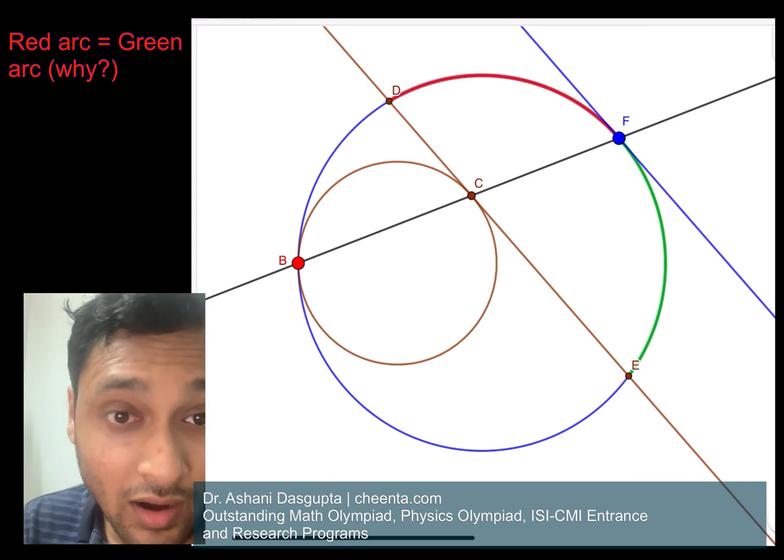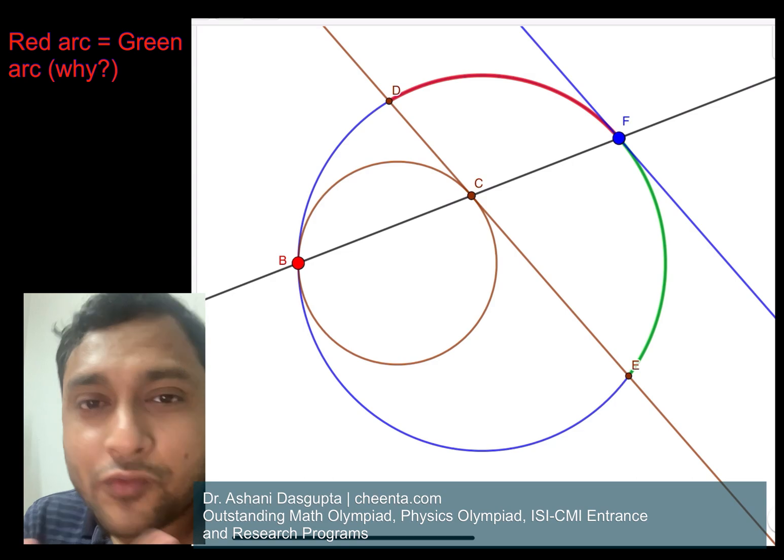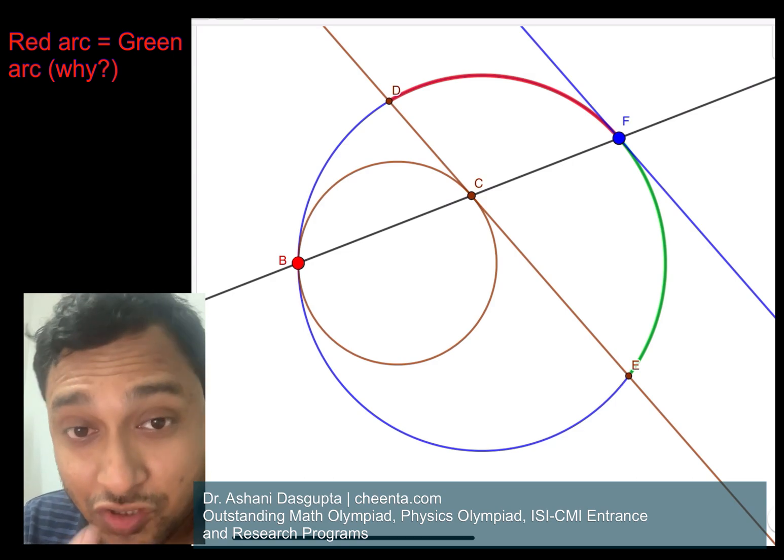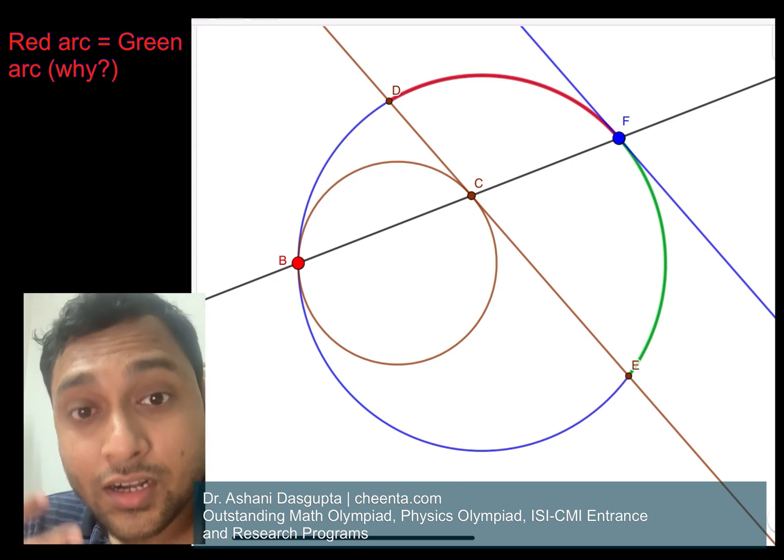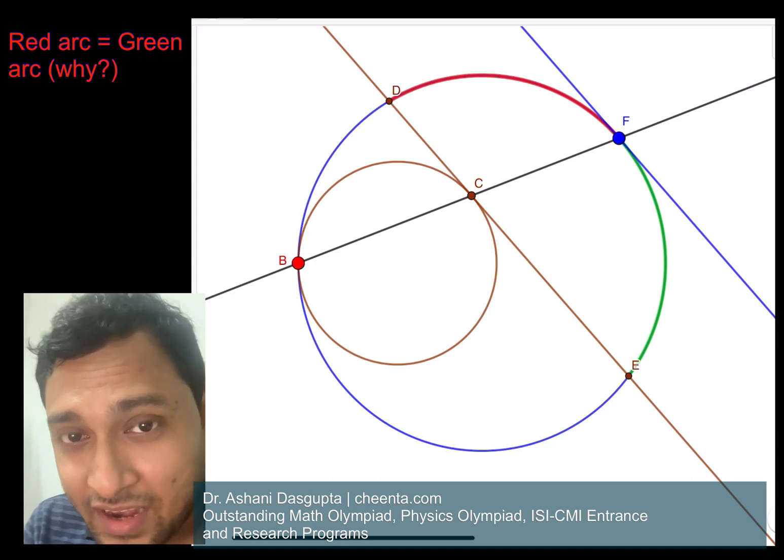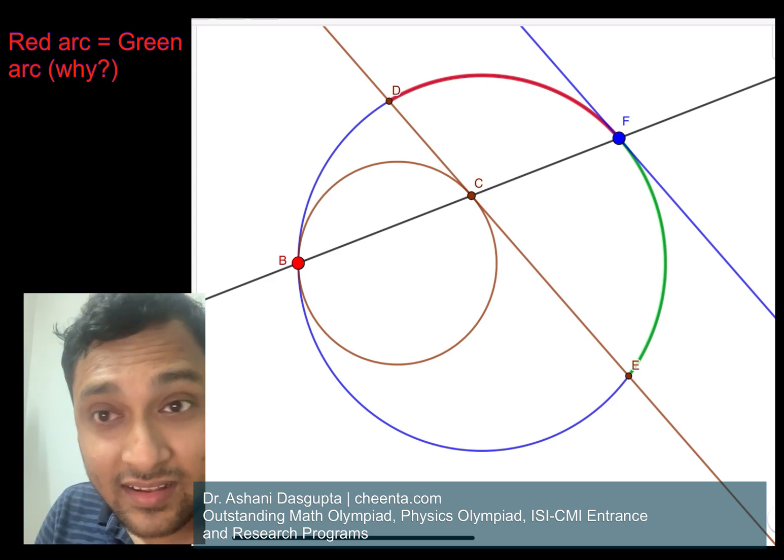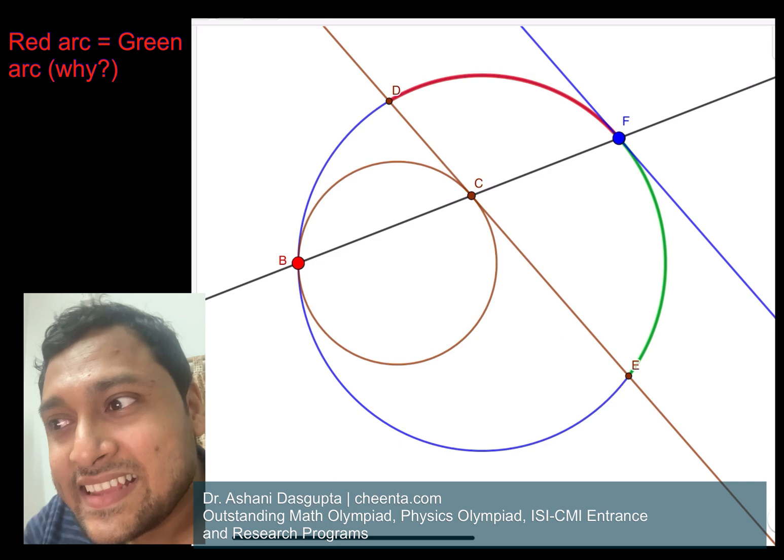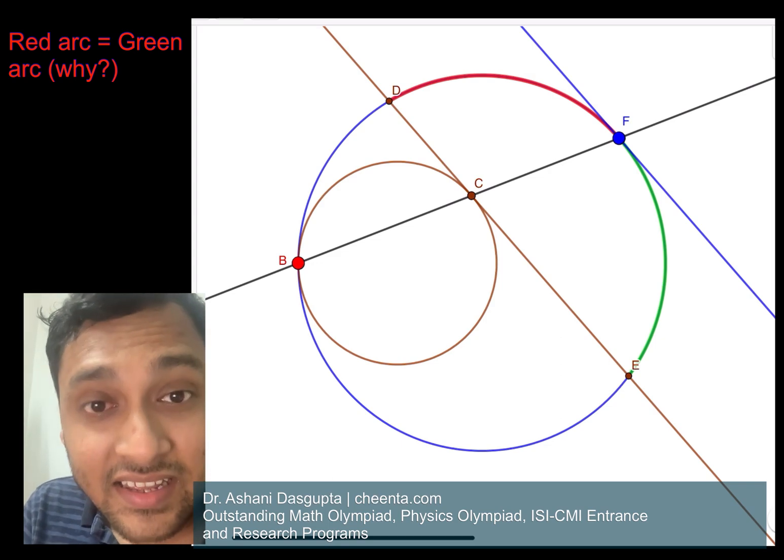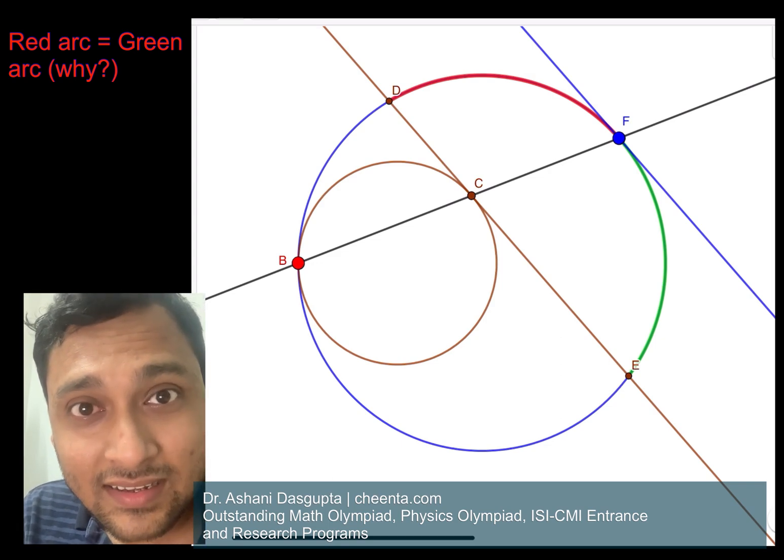And of course you can do it using normal geometry tools, but can you also think about why the golden circle growing into the blue circle makes DF and EF necessarily equal arcs? So think about it and tell me in the comment section.